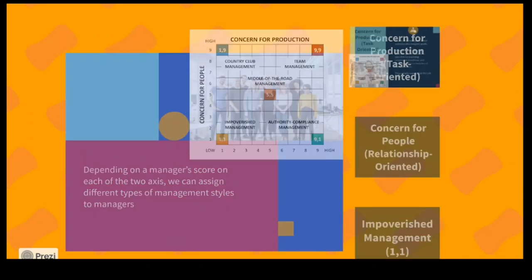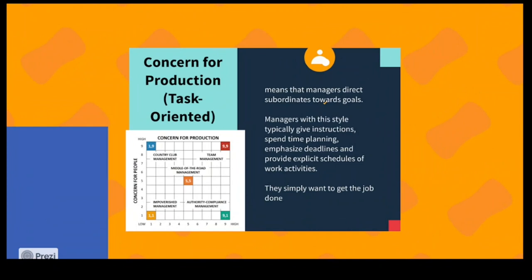Taking the first type — concern for production — production is maximized and concern for people is very much less. The manager directly controls toward the goals, likes to give explicit instructions and orders, and drives to get the job done. This is a task-oriented, production-driven leadership style.